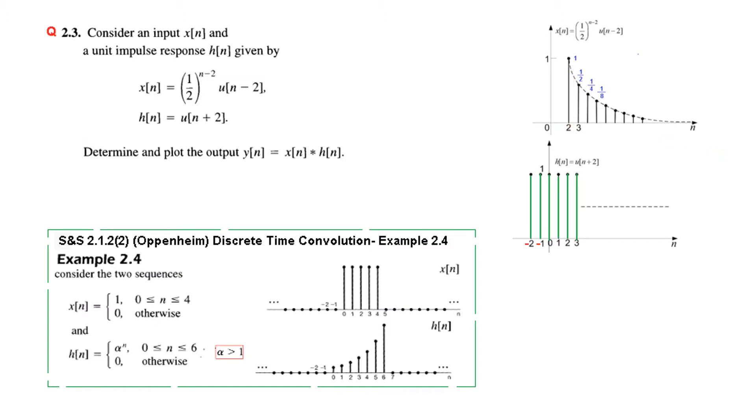And similarly, when h[n] is u[n+2], that means when n+2 is equal to 0, so n is equal to minus 2. So it is starting from minus 2. So these are the two plots.